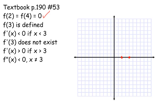The third thing they tell us is f prime of x is less than 0 if x is less than 3. What does that tell us? f prime of x less than 0 is a fancy way of saying it's negative, and if the derivative is negative, that means the original function is decreasing. So the function is decreasing when x is less than 3. It appears that 3 is an important point, so I'm going to indicate on my graph that there's going to be a change happening at 3 — I'm decreasing to the left of 3.